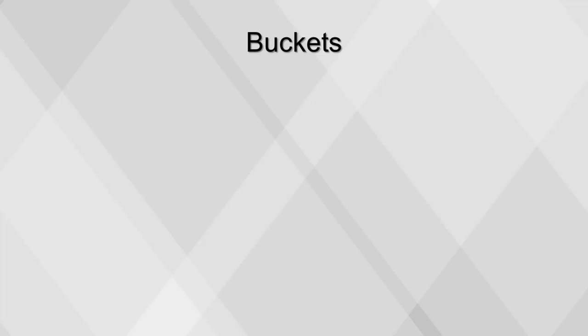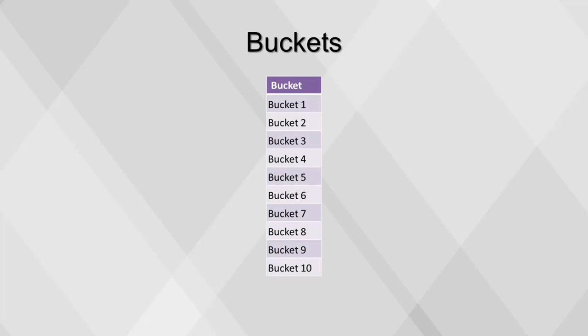Next, we'll build a histogram, which is the most common way to visualize a numeric distribution. To build a distribution, we'll group the data into buckets, or bins, of equal size. This will effectively transform the variable into a categorical variable, allowing us to count the occurrences of each bucket.